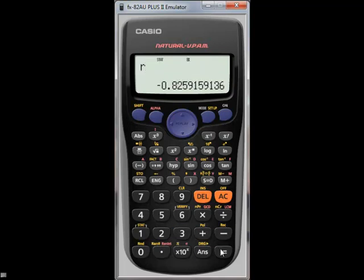If I was asked for the correlation coefficient I would press 5 and 3 and then equals, that is the correlation coefficient.